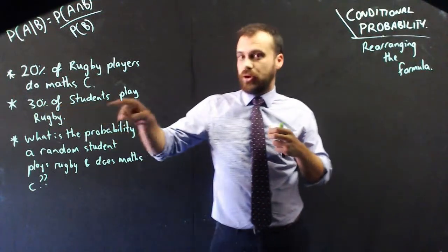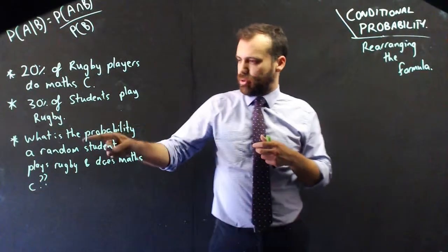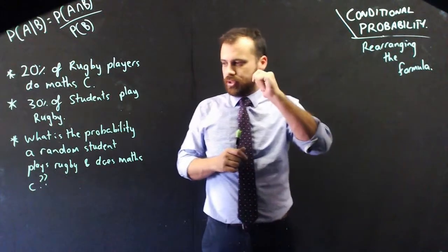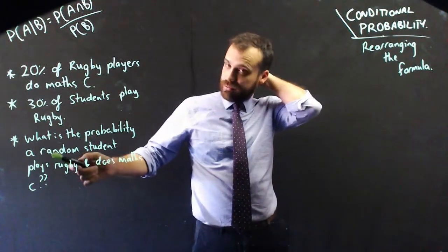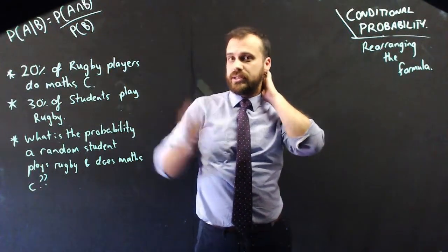Now, 30% of all Ormiston College students play rugby. What is the probability that I pick a random Ormiston student with my eyes closed, and it turns out that they both play rugby and do Math C? So, that's an intersection.